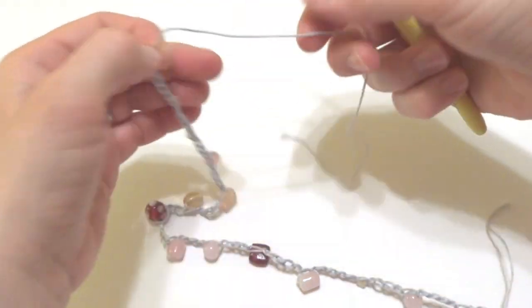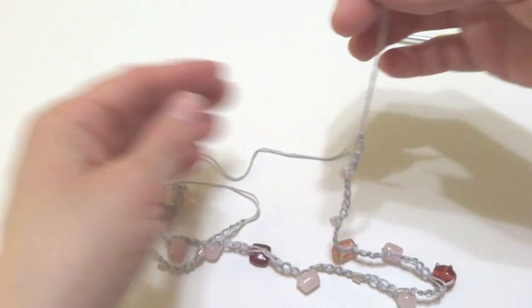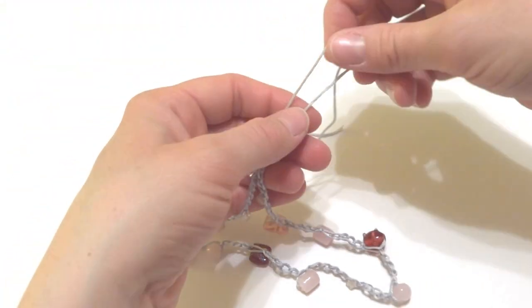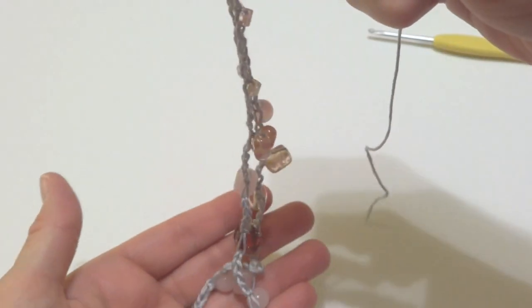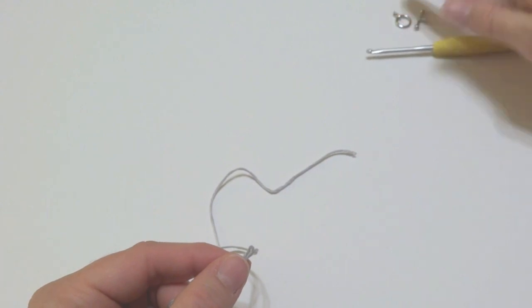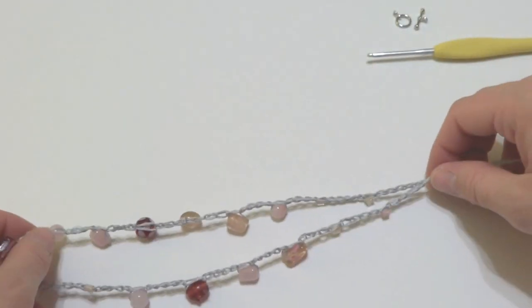And when you fasten off, make sure you have a tail on both sides. This tail is plenty long. This one's a little long, but we can trim that later. But make sure you have a tail, because we're going to be tying all of these strands together and later adding them to our toggle clasp. So that's how you make one of the strands.